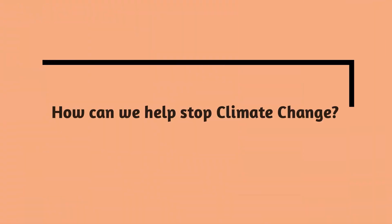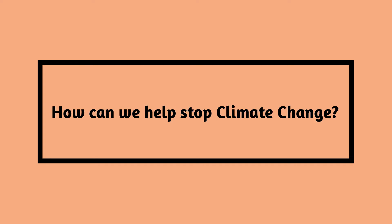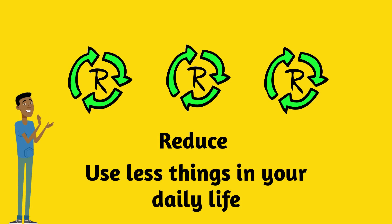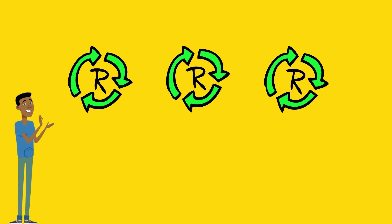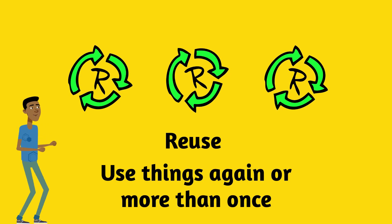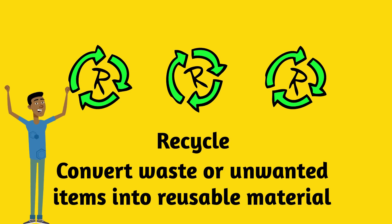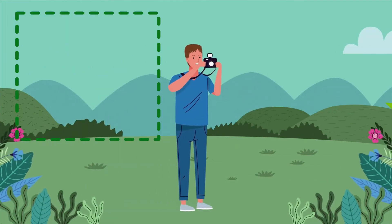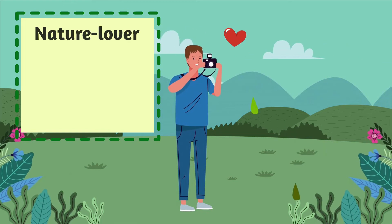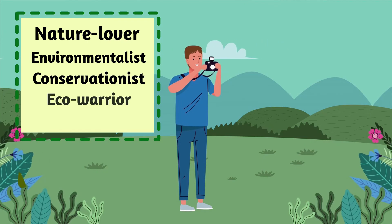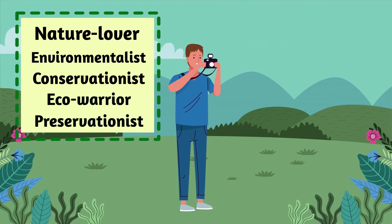Let's ask an important question: how can we help stop climate change? A handy way to remember how you can help is the three Rs. Reduce — use less things in your daily life. Reuse — use things again or more than once. And recycle — convert waste or unwanted items into reusable material. If you love nature, you may be called a nature lover, an environmentalist, a conservationist, an eco-warrior, or a preservationist.